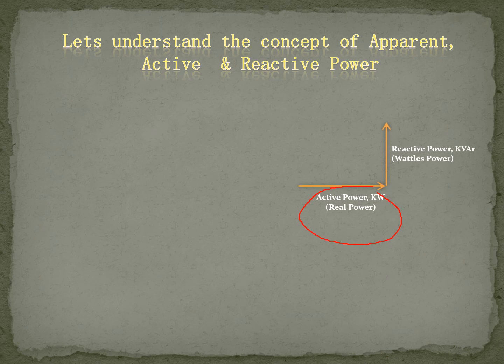Reactive power is something we call wattless power — it has no watt. It is power we don't actually consume, but it goes as a loss. Then there is apparent power, which is taken as KVA — kilovolt ampere. Apparent power is the main supply that comes from the electricity grid. Whenever the supply from the electricity grid comes, it comes in the form of KVA. So in houses we may have a 3 KVA supply — depending on the connected load and the load you are actually going to run.